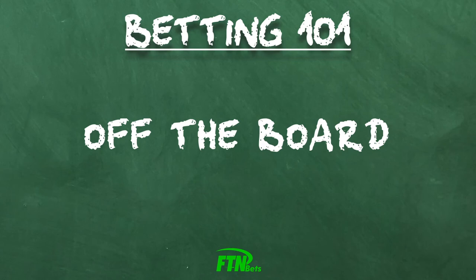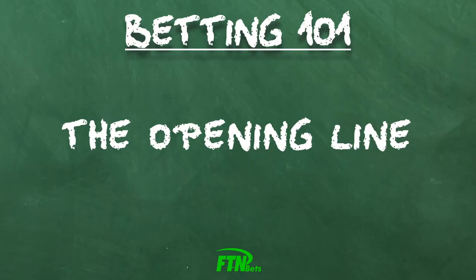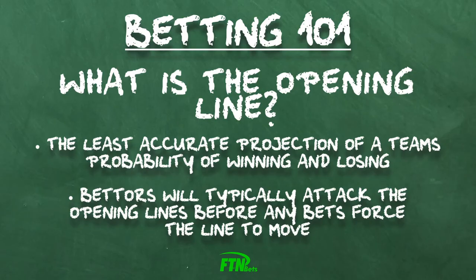Off the board occurs when a sports book removes a bet from the board. This will often take place after injury news or a transaction with a particular team that would shift the odds in either direction. The opening line is the first point spread available for a particular game, and is usually the least accurate projection of a team's probability of winning and losing. Those who try to get the best number before any bets force the line to move will typically attack the opening line as soon as they are released by sports books.